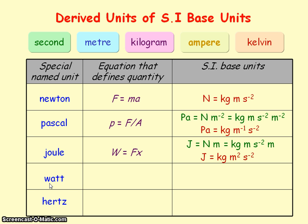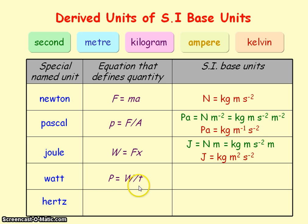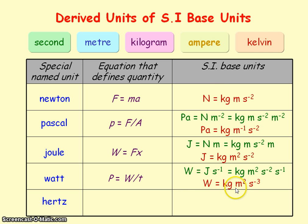The watt is the unit of power, and power equals work done divided by the time taken. So the watt is equal to the units of work done — joules — divided by the units of time — seconds — giving joules per second. Substituting for the joule to get watts into SI base units, the watt is equal to kg meters squared per second cubed.